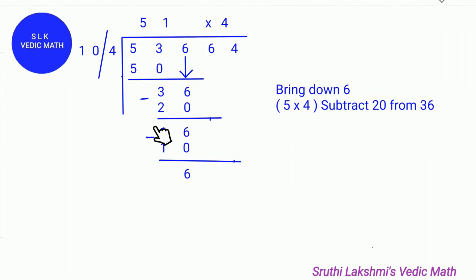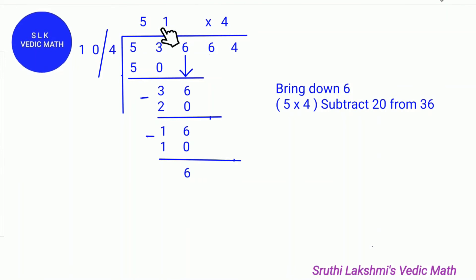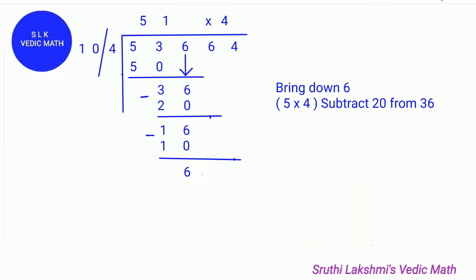Next we find how many tens can fit in 16. One ten can fit in 16, so we write 1 on the quotient line and do 10 times 1, which is 10. We do 16 minus 10, which gives us 6. Next we bring down 6.